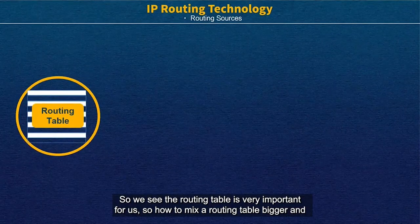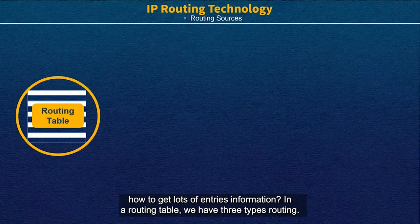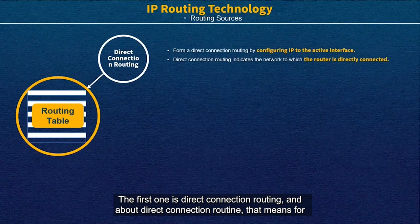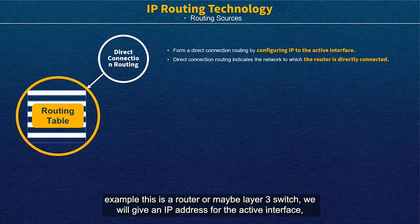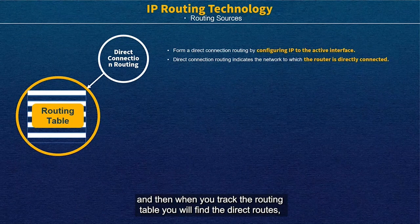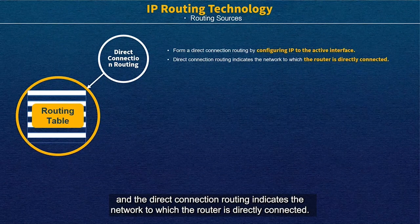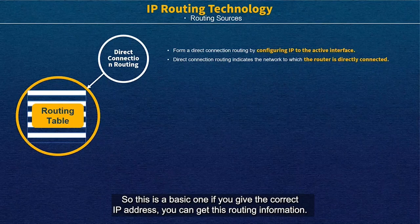The routing table is very important for us. So how do we build the routing table and get lots of entry information? In the routing table, we have three types of routing. The first one is direct connection routing. For direct connection routing, for example, this is a router or maybe a Layer 3 switch — we give an IP address to the active interface, and then when you check the routing table, you will find the direct routes. The direct connection routing includes the network to which the router is directly connected. If you assign the correct IP address, you can get this routing information.